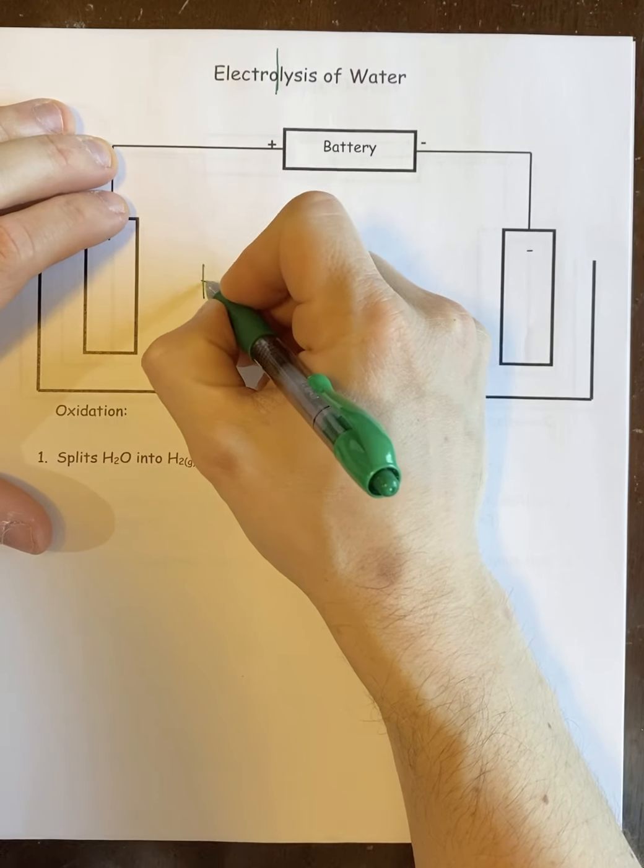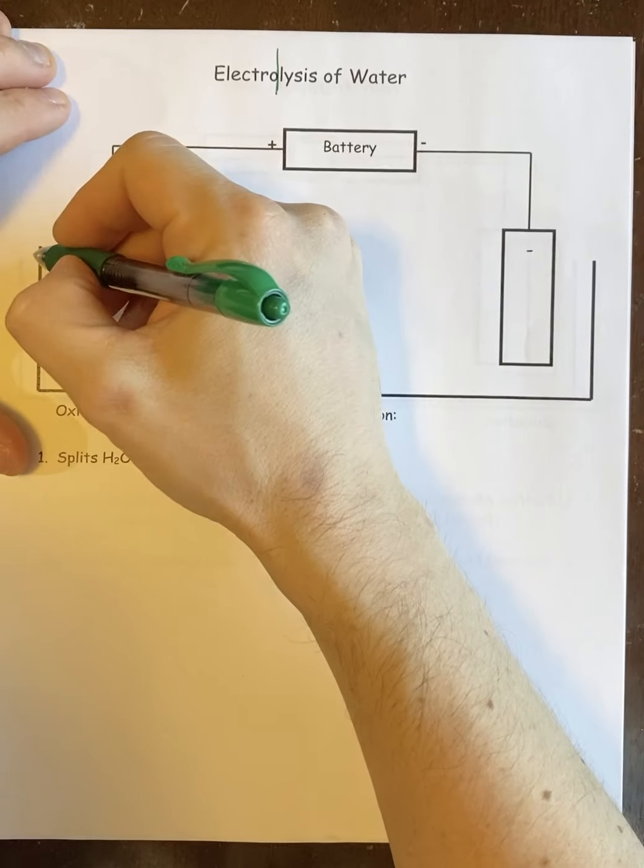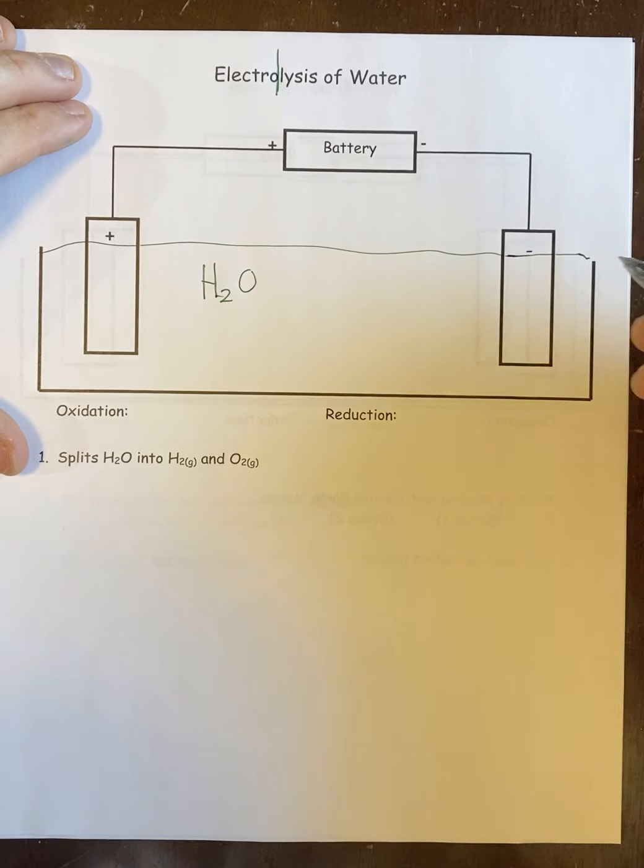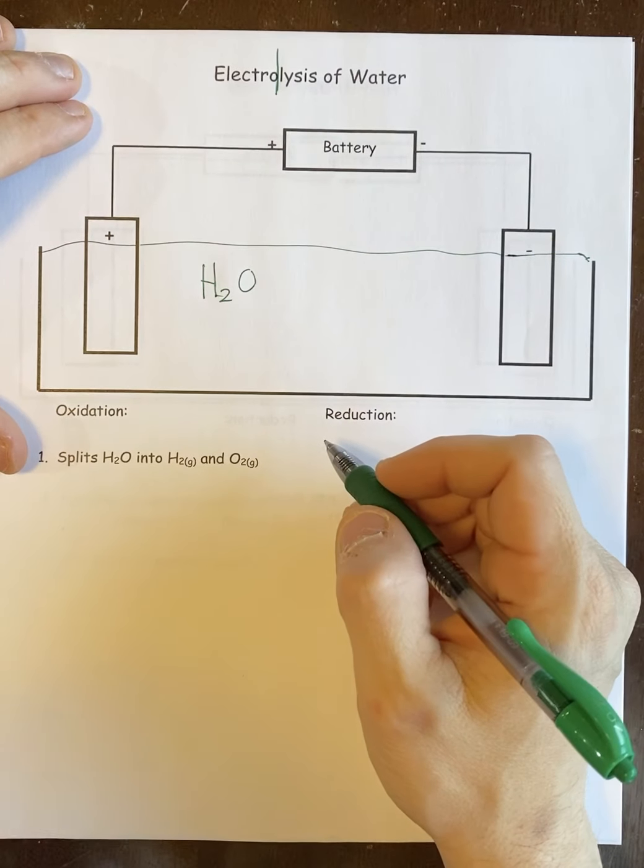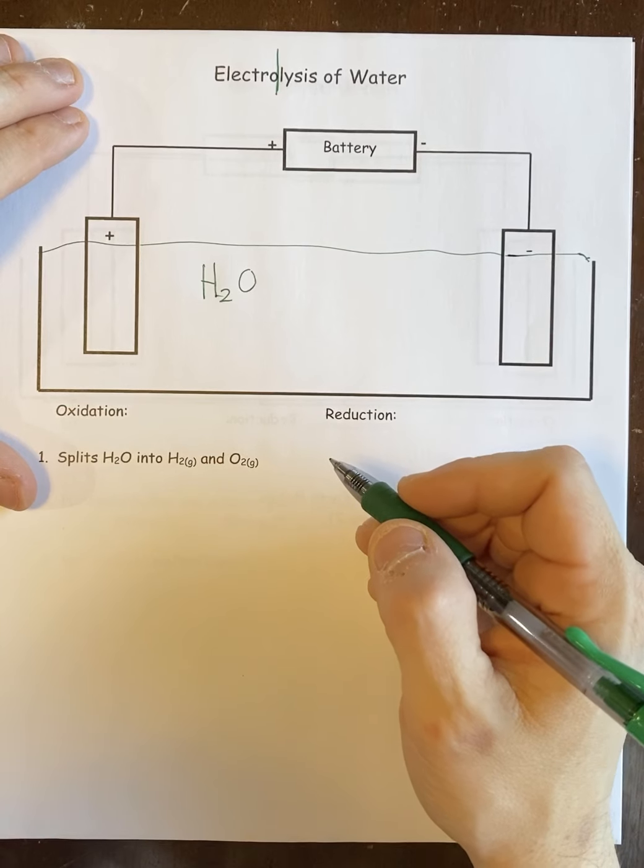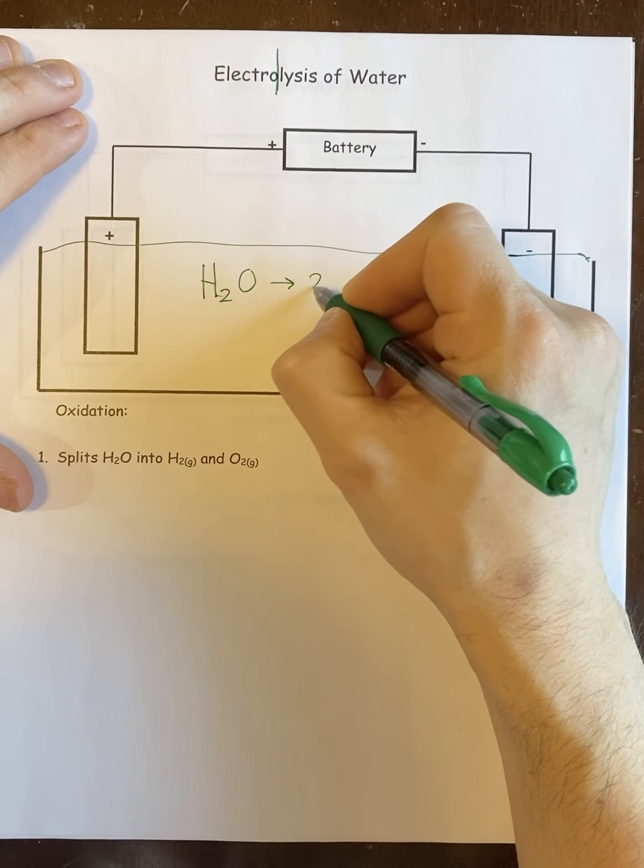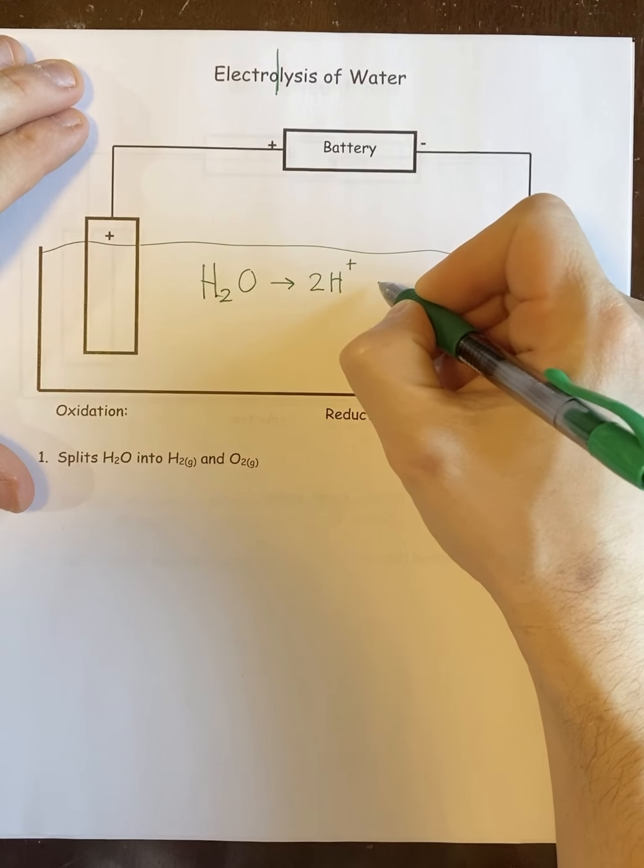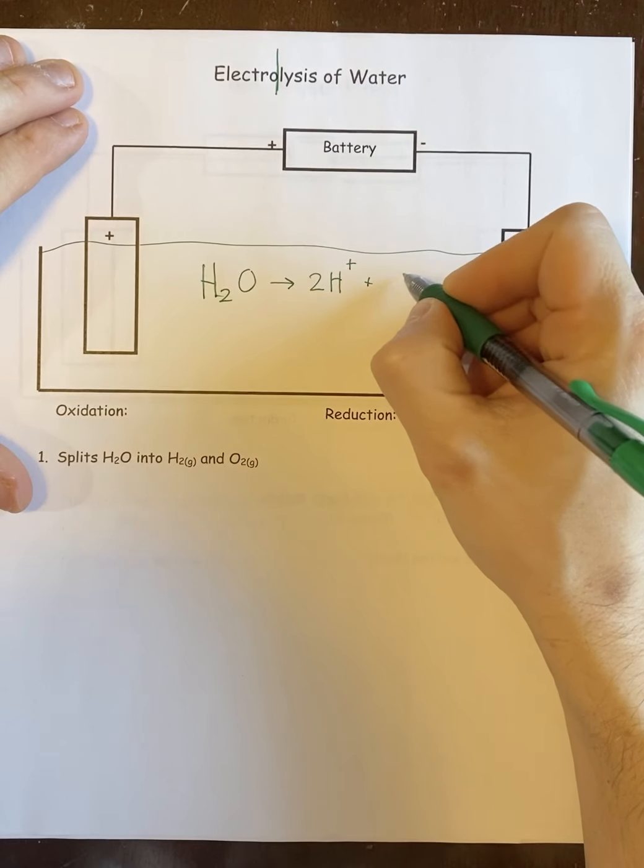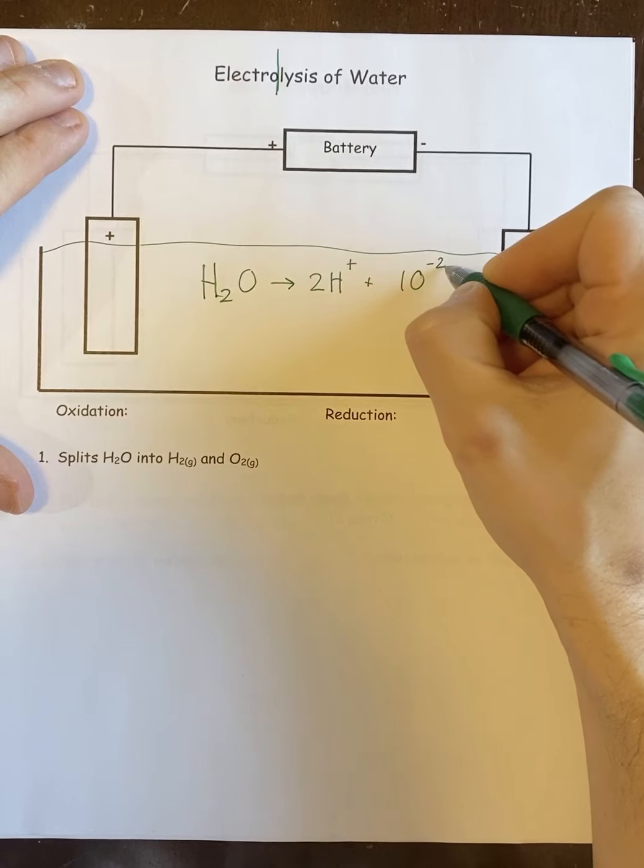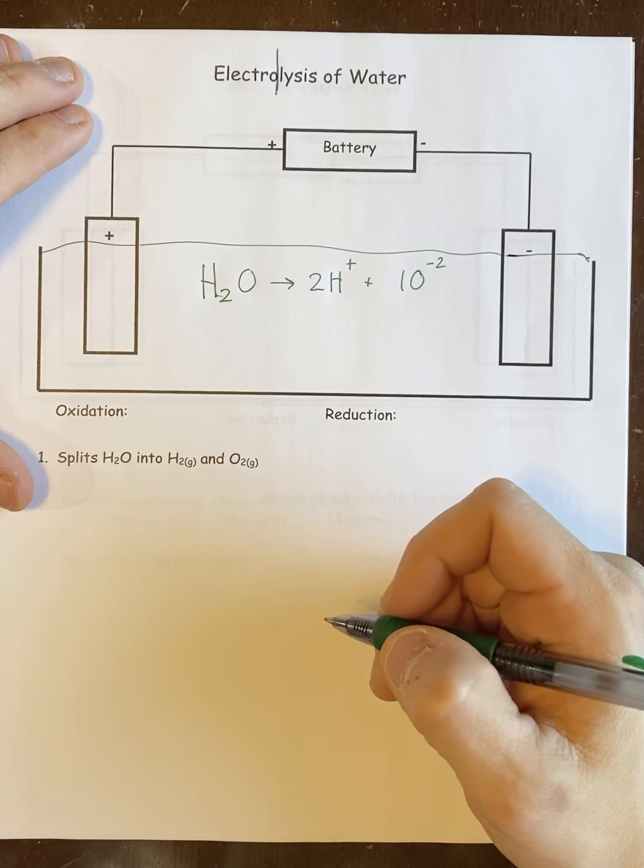And so we take a water molecule. So we have this whole thing submerged in water. And when you apply a direct electric current, so a DC current to it, water has a tendency to split into two H pluses, because there's two of them, and one O minus two. So it splits up into those.